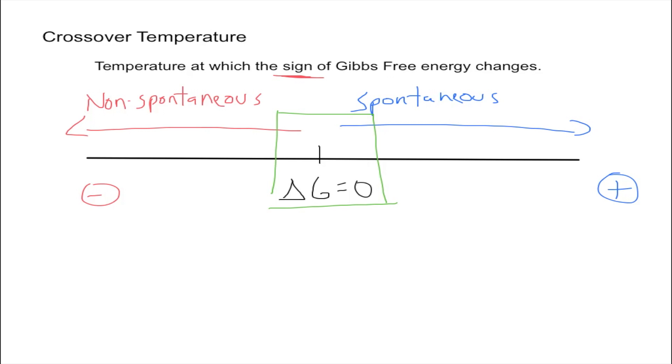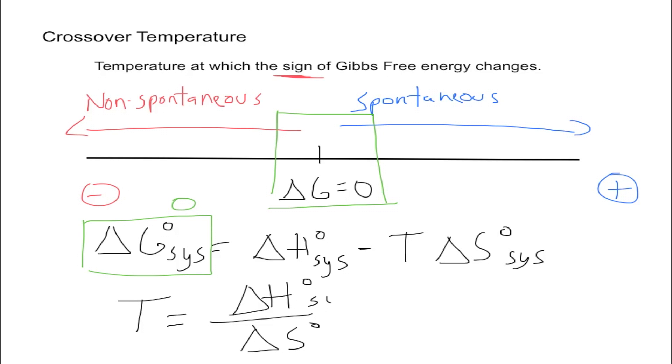We consider delta G equals zero as our boundary, meaning we're going to use that to find our temperature. From our formula, delta G for the system equals the change in enthalpy for the system minus temperature times the change in entropy. We're going to set this equal to zero. Then we can solve for temperature and find that the formula is just division between the enthalpy and the entropy. This is the formula for the crossover temperature.